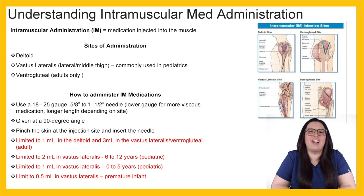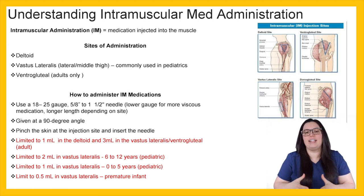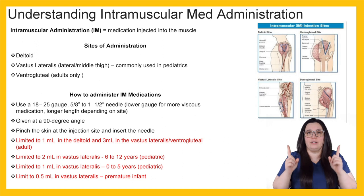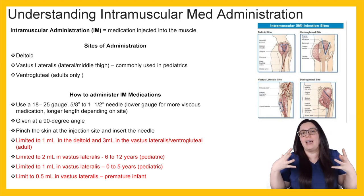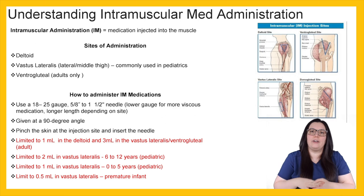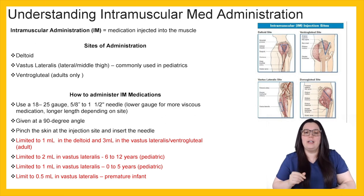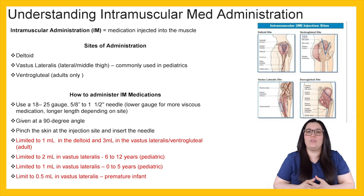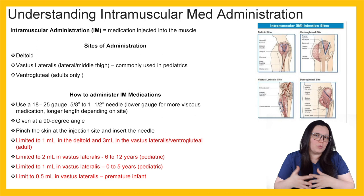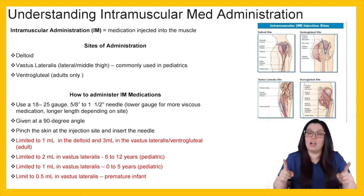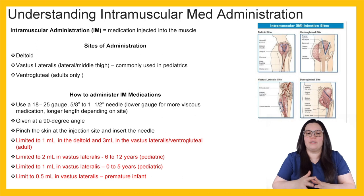So how are we going to administer IM medications? We're going to use an 18 to 25 gauge needle that's approximately five-eighths to one and one-eighth inches in needle length. The lower the gauge, the more viscous the medication; the longer the length depending on the site. If you have an obese patient, you'll use the longer one-and-a-half-inch needle, whereas a very thin person may only need five-eighths. You're going to use your clinical judgment on how long of a needle you'll need in order to get that medication to the muscle.